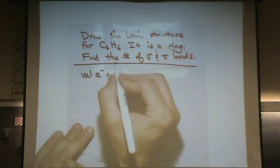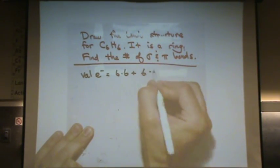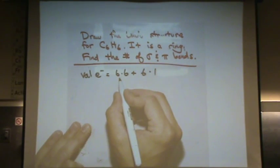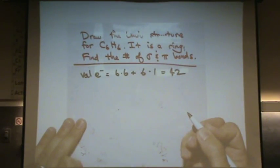Count the valence electrons, there's 6 carbons in column 6, and there's 6 hydrogens in column 1. So that's 6 times 7, or 42 valence electrons.